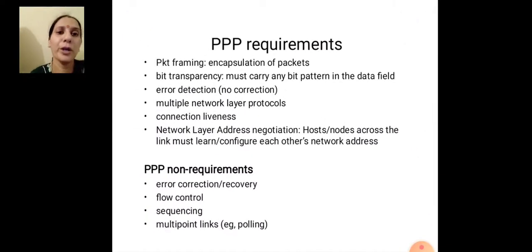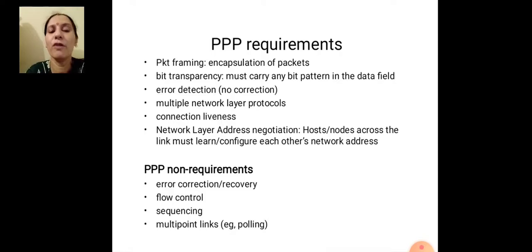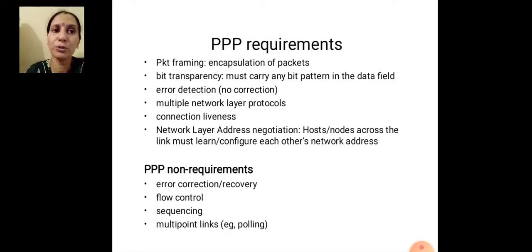Point-to-point protocol requirements: first is for packet framing and encapsulation of packets. Next is for bit transparency — it must carry any bit pattern in the data field; we add an extra bit when we forward our packet. For error detection, PPP is used only for detecting an error, not for correction.